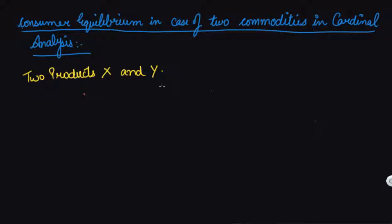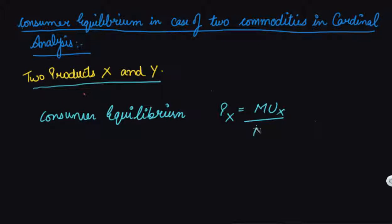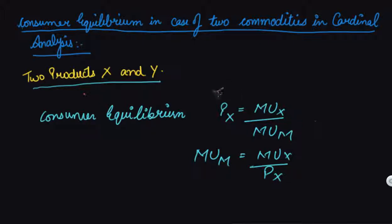When we did one commodity, what was the consumer equilibrium? In case of one commodity, where a consumer gets its maximum satisfaction is your equilibrium. So the equilibrium was at P_x, and the condition was MU_x divided by P_x equals MU_M, or MU_M equals MU_x divided by P_x. This was the point of equilibrium we get in your one commodity analysis.